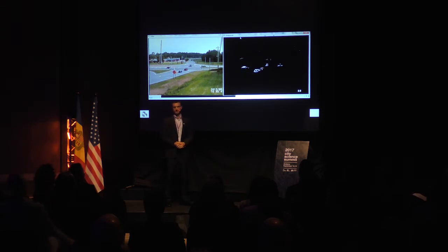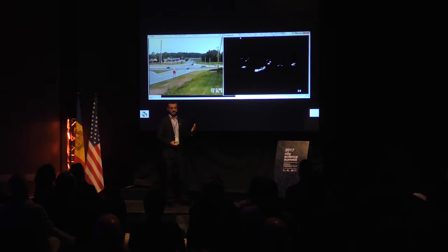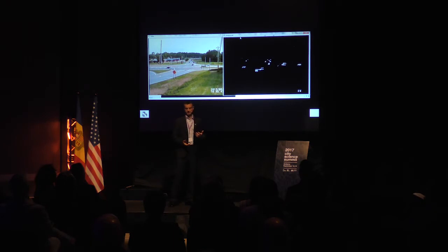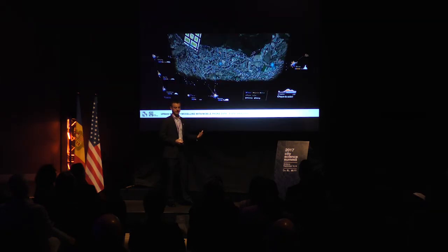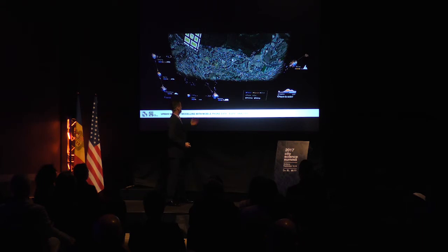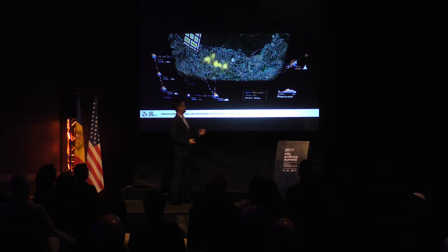If we consider the activity on an average day as the background, we can simply subtract this from the activity of the day we're interested in. On the next slide, yellow areas represent areas where there's increased activity compared to an average day, whereas blue represents decreased activity. What we find is that in popular tourist areas, before the event there's an increase in activity, as well as a sharp spike in activity at Park Central during the actual time of the event.